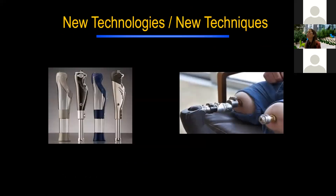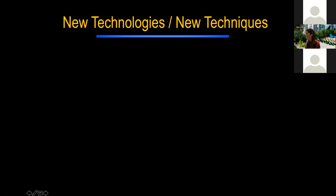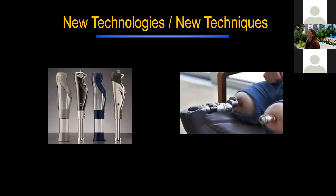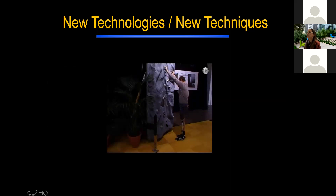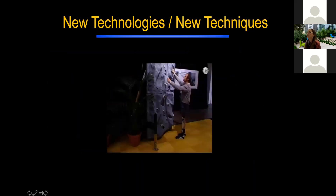On cool things we're doing in our department: for very special prosthetic cases, we are connecting the prosthesis directly into the femur — a technique called osseointegration. We're integrating the prosthesis into the bone itself, which provides great proprioceptive feedback for gait so the patient really knows where their limb and knee are in space. One patient fitted with this technology was able to climb a climbing wall.